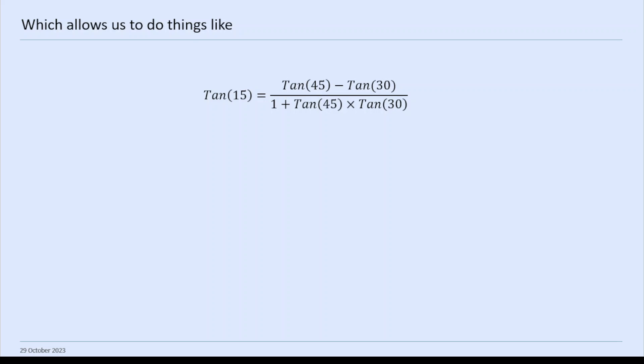Let's look at tan. So tan 15, we can write as tan 45 minus tan 30 over 1 plus tan 45 times tan 30. Tan 45 is 1, tan 30 is 1 over root 3, so there's a bit of algebra here. And then tan 45 times tan 30 is 1 over root 3 again, because tan 45 is just 1, so it's 1 plus 1 over root 3.